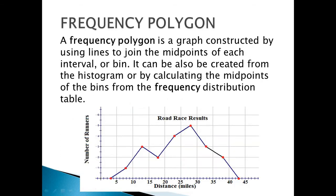The next term is frequency polygon. A frequency polygon is a graph constructed by using lines to join the midpoints of each interval or bins. It can also be created from the histogram or by calculating the midpoints of the bins from the frequency distribution table. Like the histogram, the frequency polygon is constructed in the same manner but using lines.